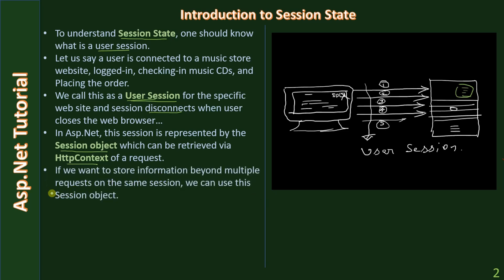If we want to store information beyond multiple requests on the same session, we can use this session object. Let's say this is the first request and this is the second request where we are doing the login. After the login, we get the session object and store something. Whatever you store can be seen beyond multiple requests — at request 2 you stored something, and at request 4 you can retrieve whatever was stored. This is a single user session: user session A which logs into the site and purchases some music CDs.